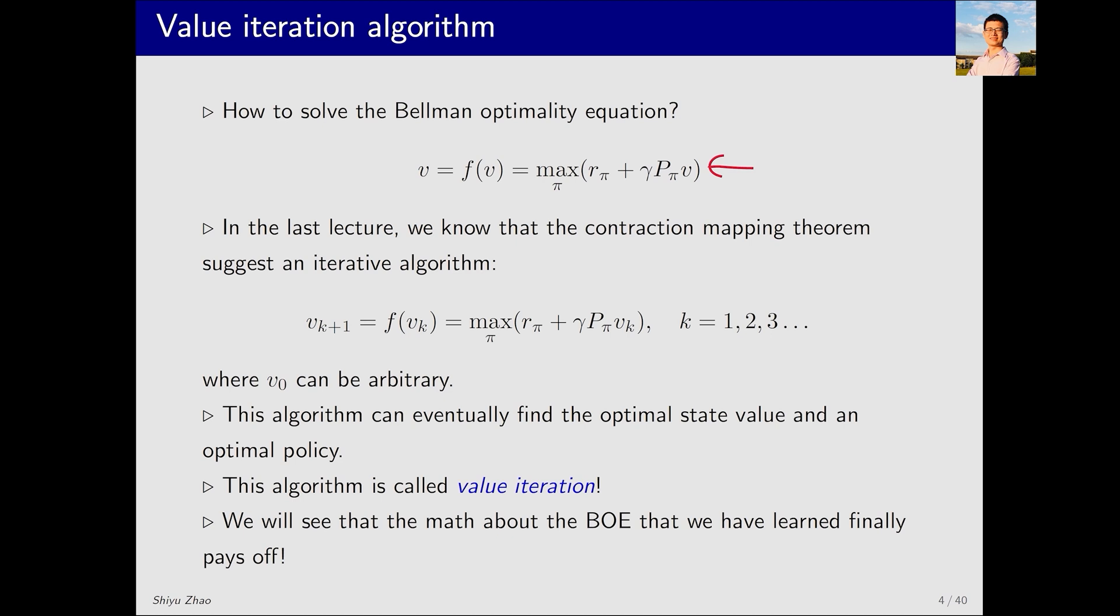Let's revisit how we solve the Bellman optimality equation. In the last lecture, we introduced the contraction mapping theorem. This theorem tells us that just by using this algorithm, we can find the optimal policy and the optimal state value. It's an iterative algorithm where the right-hand side is v_k and the left-hand side is v_k+1. Actually, this algorithm has a name: value iteration.